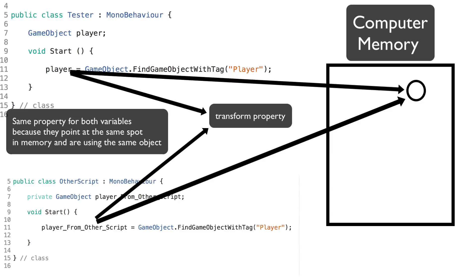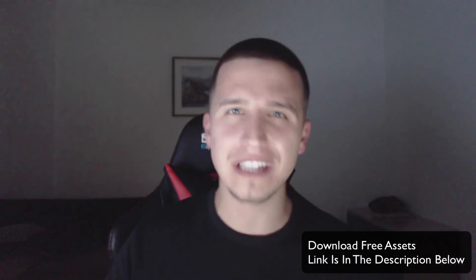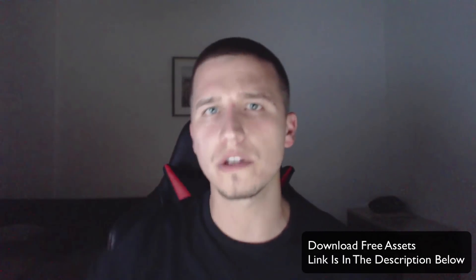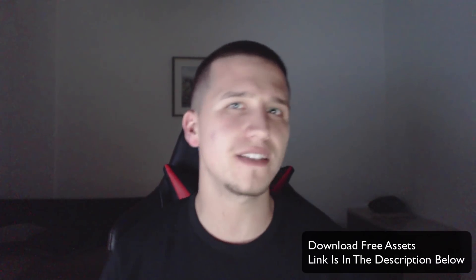I hope this clears things up on how object-oriented programming works in Unity — what GetComponent is, what GameObject.Find is, and how they work behind the scenes. Fahir here from AwesomeTudes.com. You can download free assets — the link is in the description below. I'll see you guys in the next video. Take care!